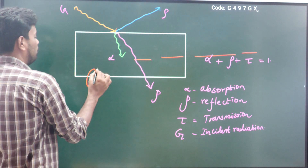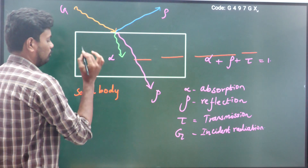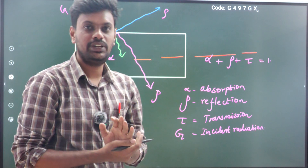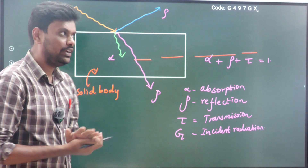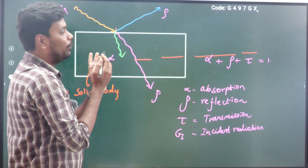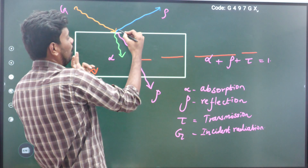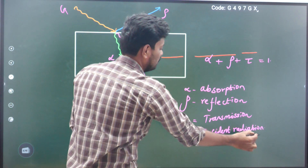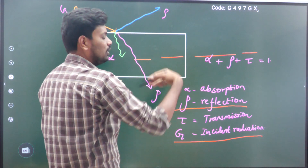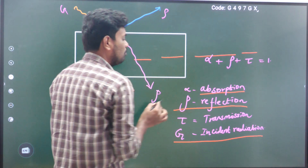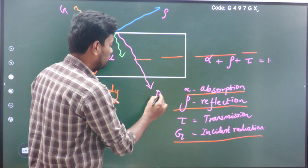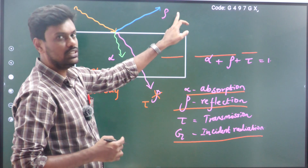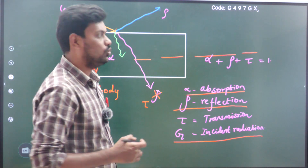Considering this as one solid body, the radiation energy which is falling on the body is called incident radiation — the technical term is 'incident radiation,' denoted by G. The amount of energy reflecting from the body is denoted by rho. Alpha means absorption, and tau indicates transmission. So: G is incident radiation, rho is reflection, alpha is absorption, and tau is transmission.